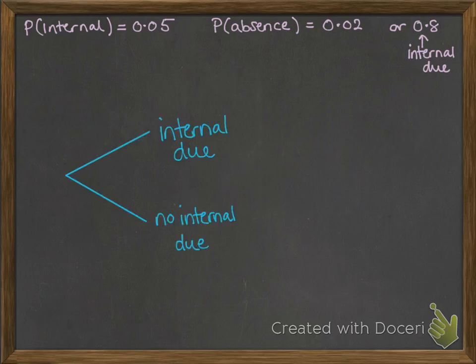We've got either the internal is due or it's not due. So we have this branch of the tree. We want to show the probability that on this particular day an internal is due. So that's where the 0.05 goes.